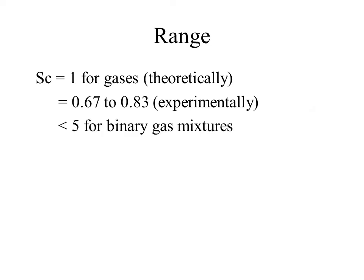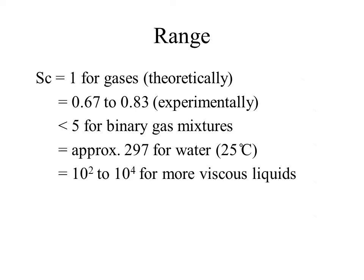For binary gas mixtures, Schmidt number may range up to 5. For liquid, Schmidt number is much higher. For example, approximately 297 for self-diffusion in water at 25 degrees Celsius, and ranging into the thousands for more viscous liquids and even for water with slowly diffusing solute.